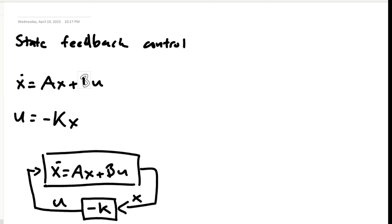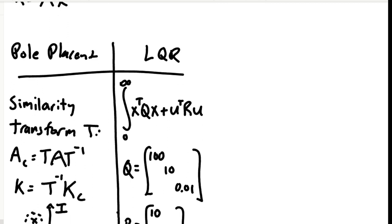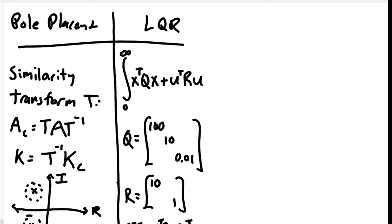In practice, we usually want more nuanced control over the system. Generally speaking, there are two methods used to find a gain matrix K: pole placement and LQR. Pole placement works by taking a specific set of eigenvalues and finding K that gives A bar these eigenvalues.